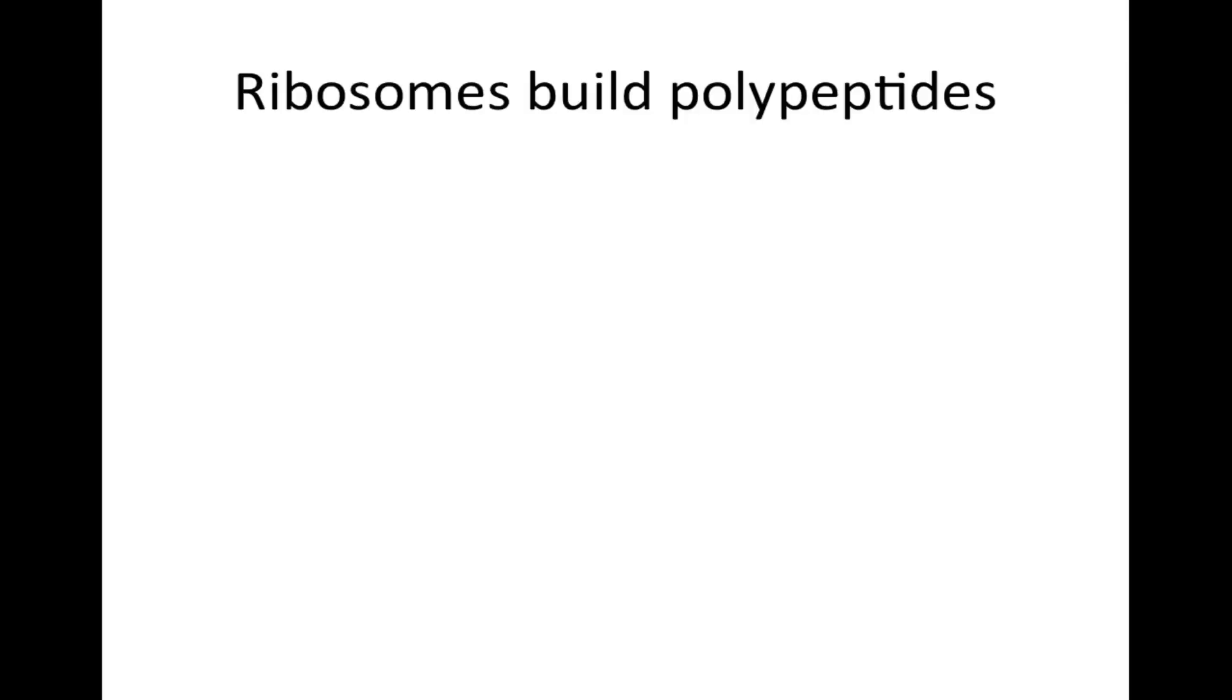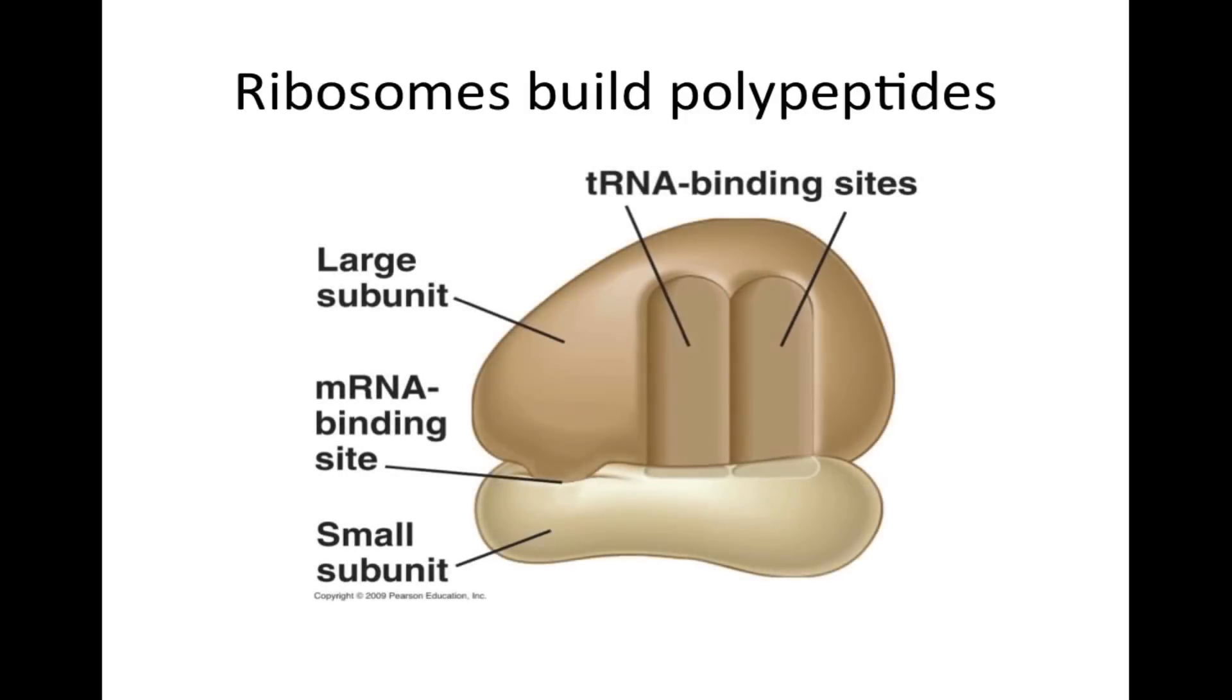Ribosomes build polypeptides. Ribosomes have a large subunit and a small subunit. The large subunit has a tRNA binding site where tRNAs bind to translate the RNA into the polypeptide chain.